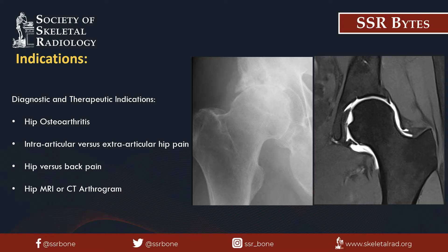Hip injections can be performed for a variety of reasons with diagnostic and therapeutic indications. A frequent indication is patients with known hip osteoarthritis who are referred for injections for pain relief. There are also scenarios where it's difficult to discern whether the patient's hip pain is due to extra-articular versus intra-articular pathologies, or whether the pain is hip versus back pain. These fluoroscopic guided hip injections can provide diagnostic information as to whether the hip is the pain generator. Another frequent indication is to instill intra-articular contrast for patients undergoing CT or MRI arthrography.